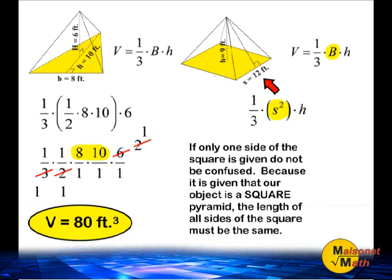You would still take the length of that side and square it, or multiply it by itself. In this case, s is equal to 12 feet, and 12 to the second power is equal to 144.